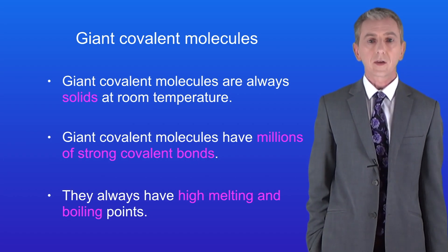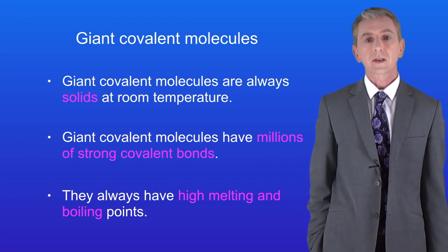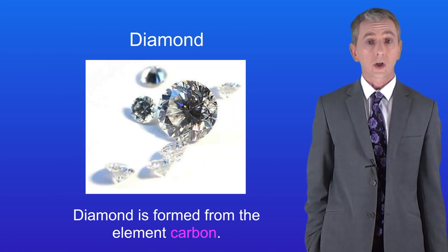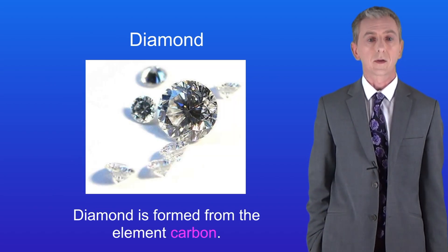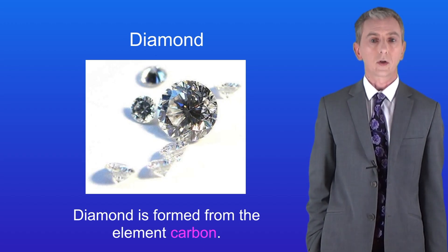In order to melt these compounds we have to break all of these covalent bonds and that takes a great deal of energy. Let's look at our first giant covalent molecule which is diamond. Diamond is formed from the element carbon and it's really important that you learn that.